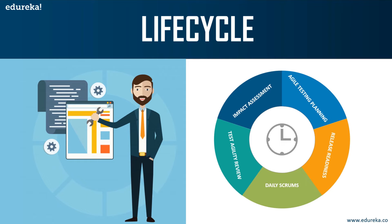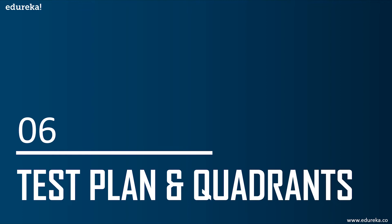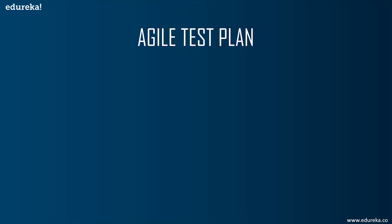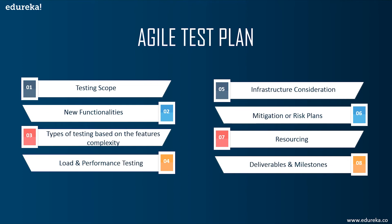Now let's look at the agile test plan and quadrants. In agile testing, the test plan is written and updated for every release. It includes: the scope of testing, consolidating new functionalities to be tested, types and levels of testing, performance and load testing requirements, infrastructure considerations, mitigation and risk plans, resource planning, and finally deliverables and milestones — because you need to deliver your product as soon as possible to meet customer requirements.